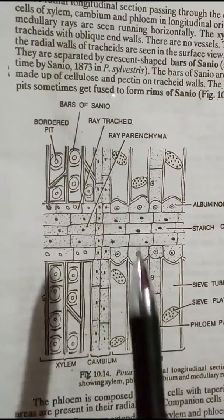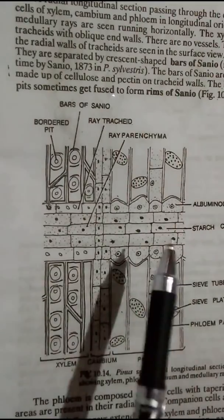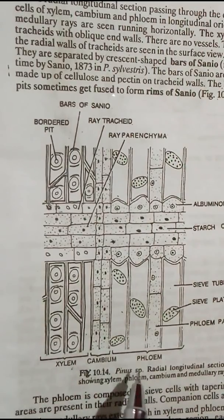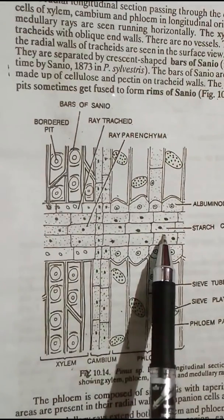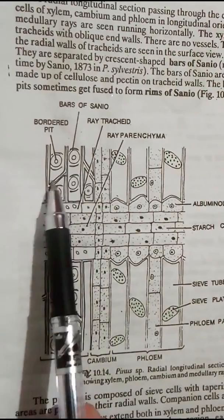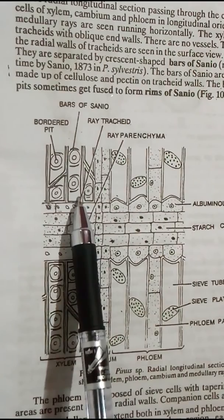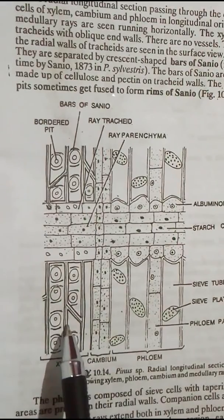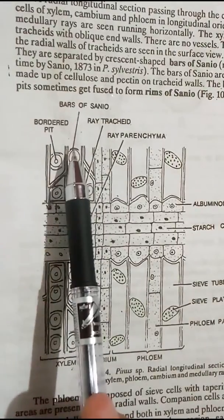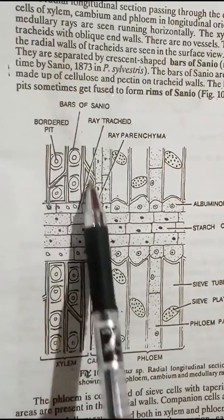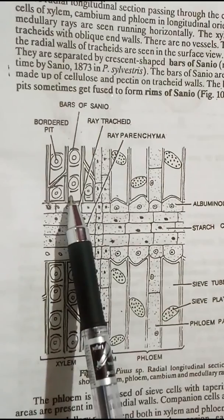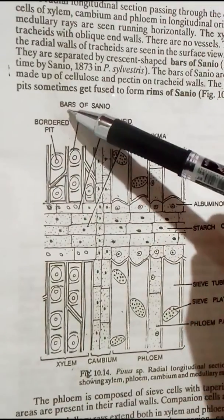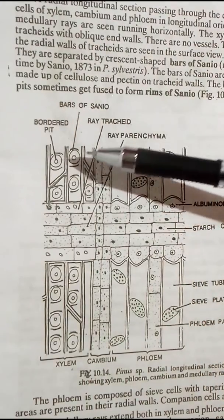In the radial longitudinal section of the vascular bundle, the stem is cut along the radius. The pith, xylem, cambium, and phloem can be seen. The medullary rays are seen running horizontally. The xylem is composed of tracheids with oblique end walls — there are no vessels in the xylem. The bordered pits on the radial wall of tracheids are seen in surface view and are uniseriate, arranged in a single row.